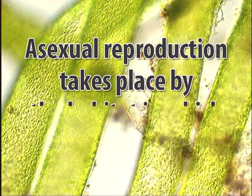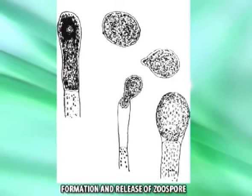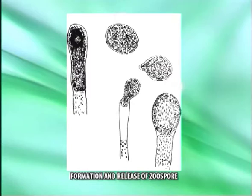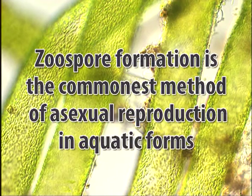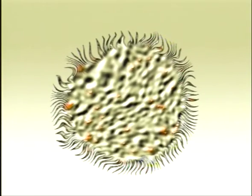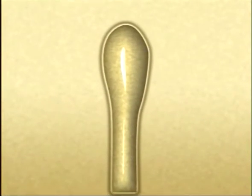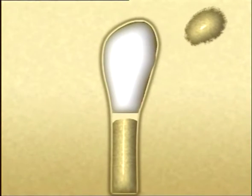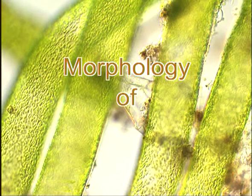In Vaucheria, asexual reproduction takes place by different modes depending upon the habitat. In aquatic species, it occurs by formation of zoospores, while terrestrial species form zoospores only when flooded. Zoospore formation is the commonest method of asexual reproduction in aquatic forms. Zoospores are large, multinucleate, and multiflagellate structures formed singly within elongated club-shaped zoosporangia, which develop at the end of side branches. The zoosporangium swells into a club-shaped structure, and the entire protoplast contracts to form an oval multinucleate mass — the incipient zoospore. The mature zoospore escapes through a narrow aperture formed by gelatinization of the wall at the distal end of the zoosporangium.